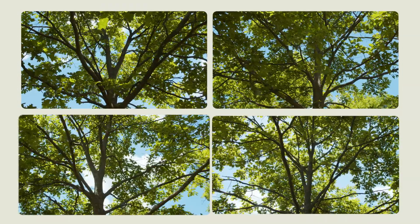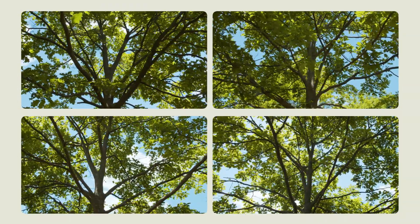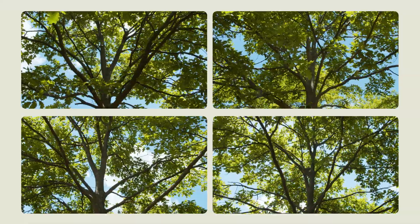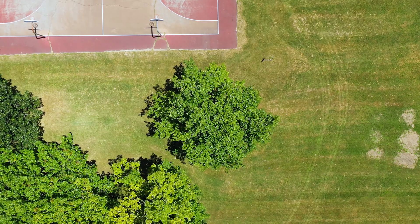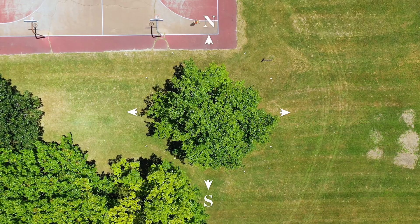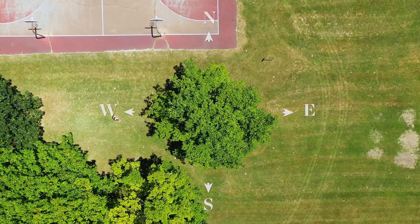For larger trees, it's good to stand underneath the tree and look up at four different places while under the tree. You can use the four cardinal directions — north, south, east, and west — as a guide.